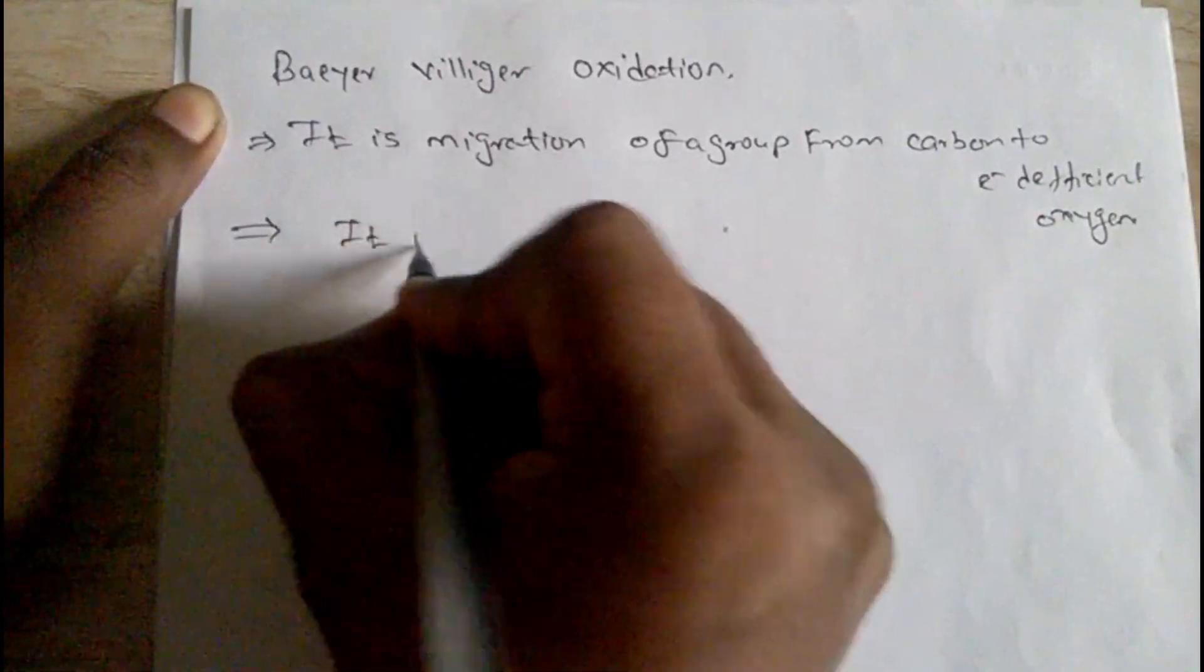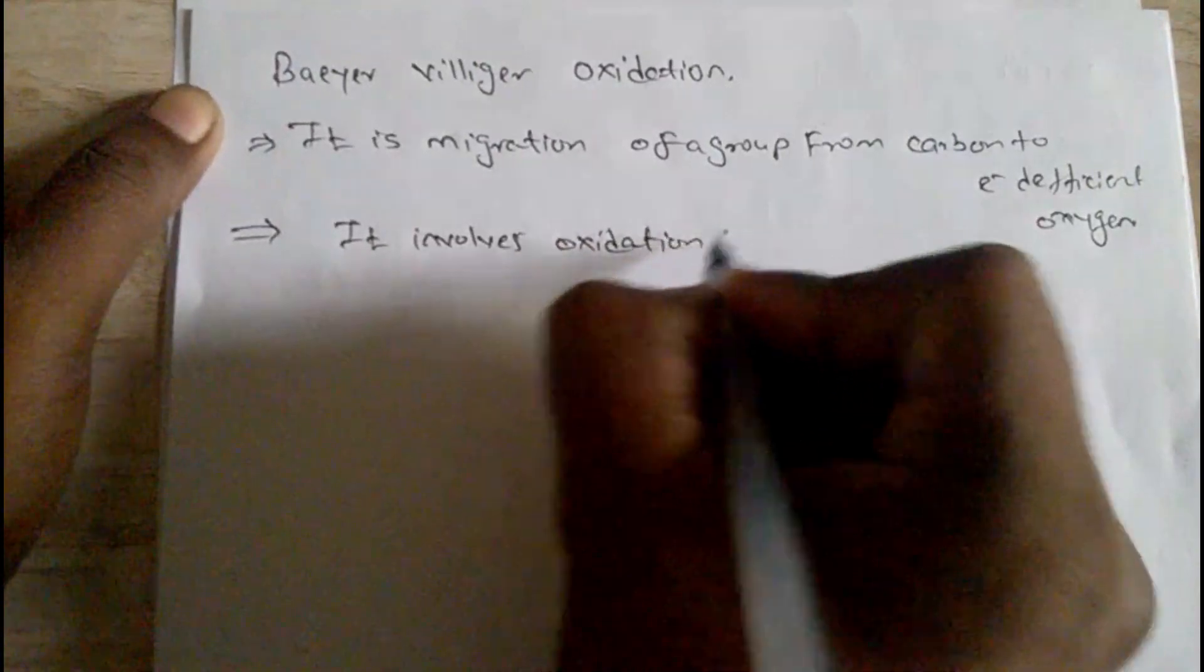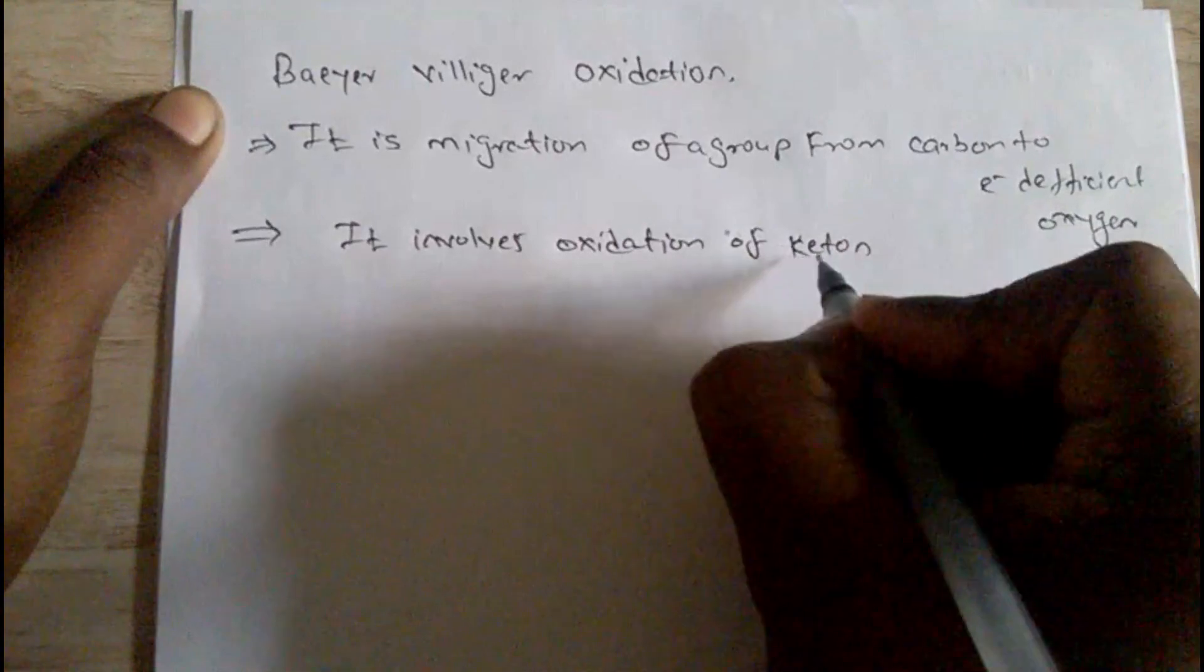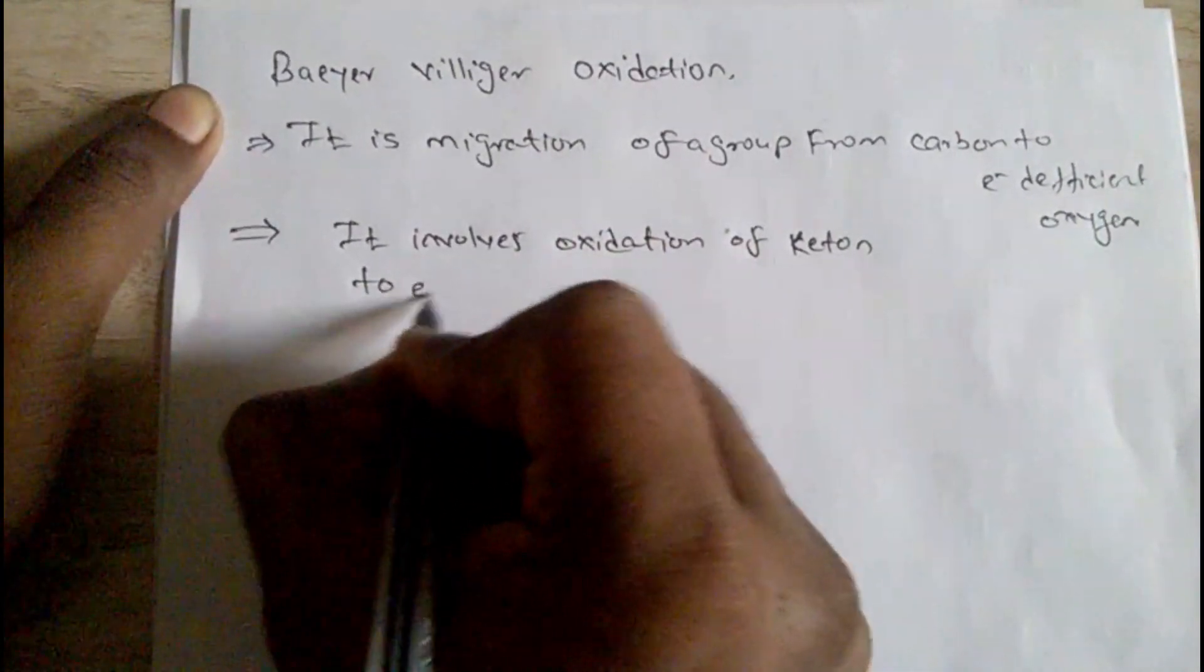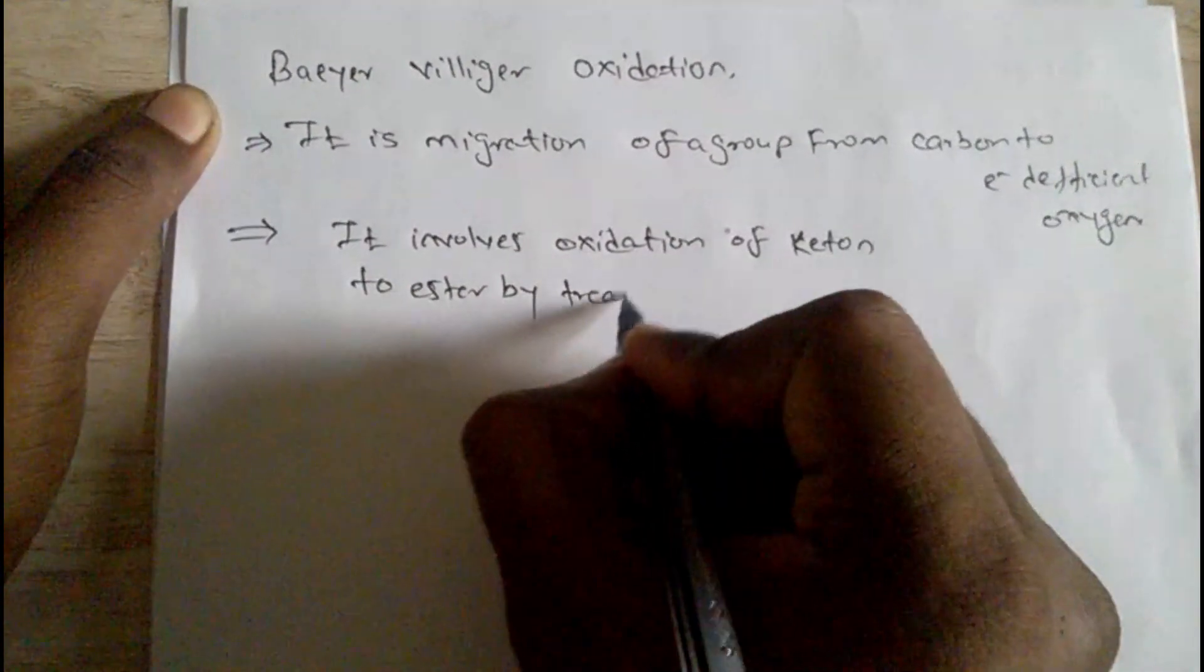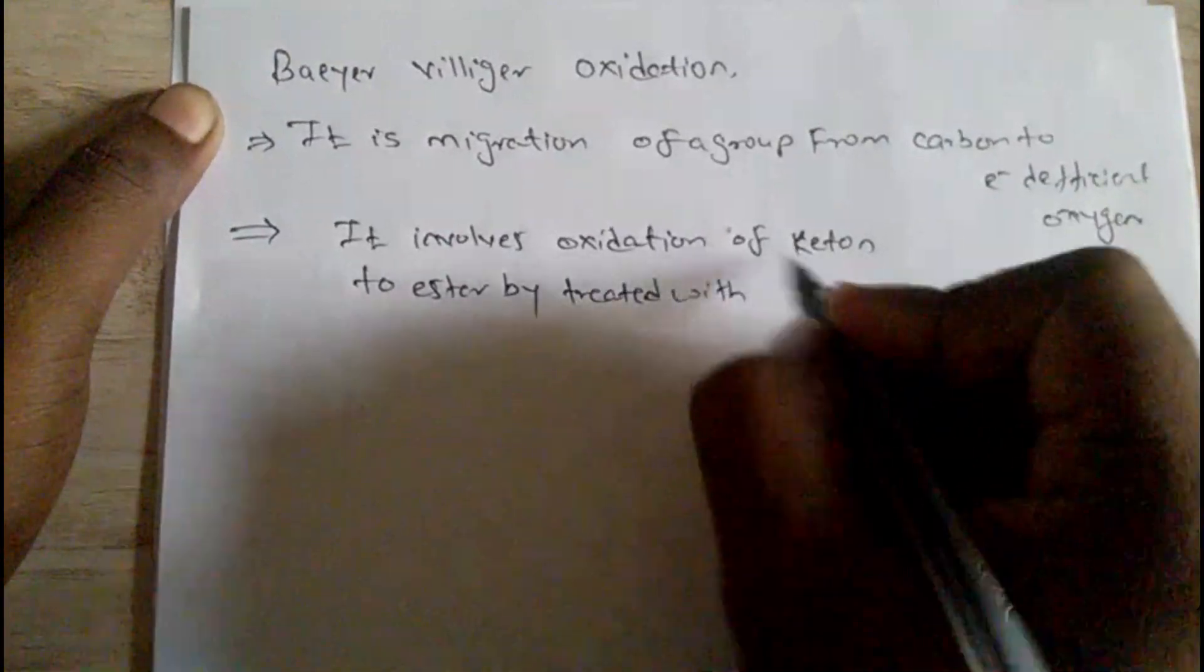It involves oxidation of ketone to ester by treated with peracid.